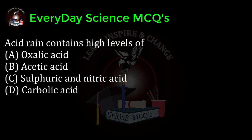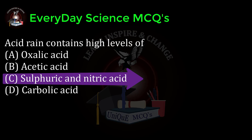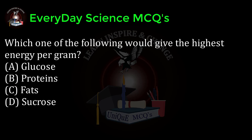Acid rain contains high levels of: a) oxalic acid, b) acetic acid, c) sulfuric and nitric acid, d) carbolic acid. Correct answer: c.